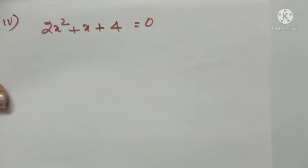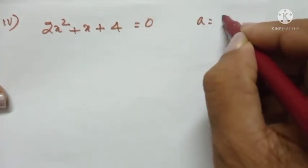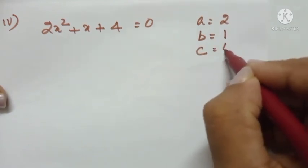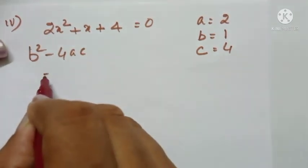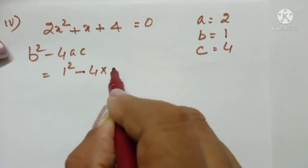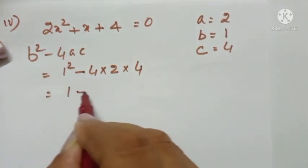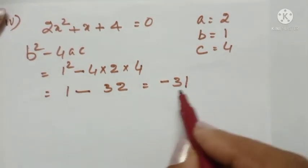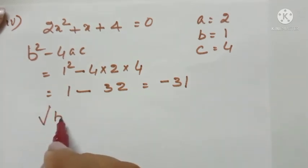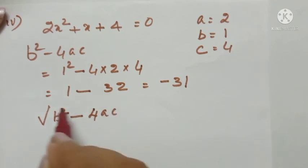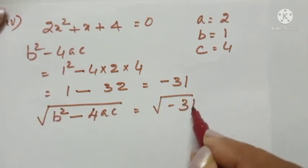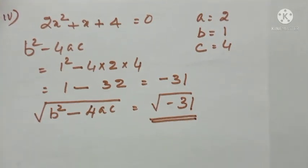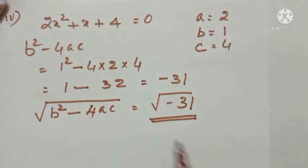The next equation is 2x² + x + 4 = 0. Here a = 2, b = 1, and c = 4. Then b² - 4ac = 1² - 4 × 2 × 4 = 1 - 32 = -31. Since b² - 4ac is negative, the square root of a negative number does not exist. Therefore, the roots of the equation 2x² + x + 4 = 0 do not exist.